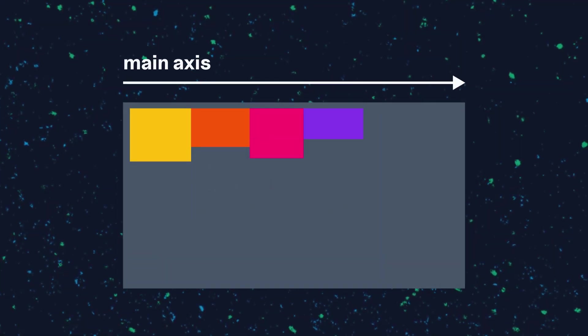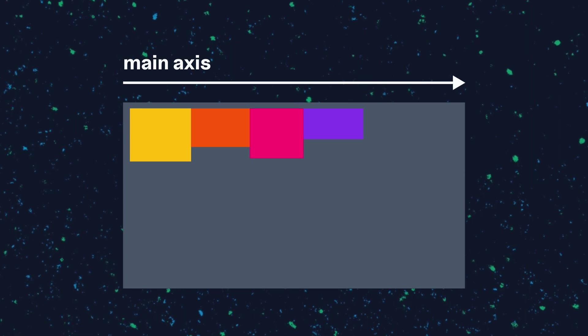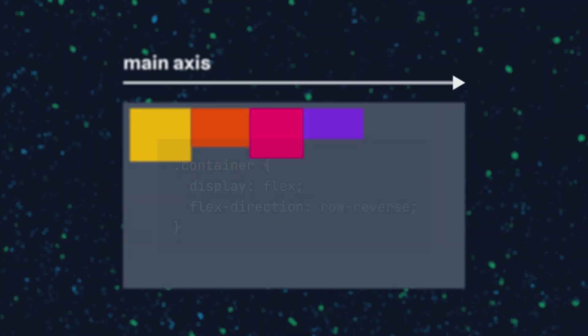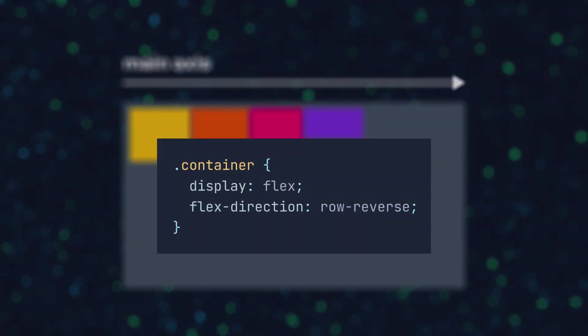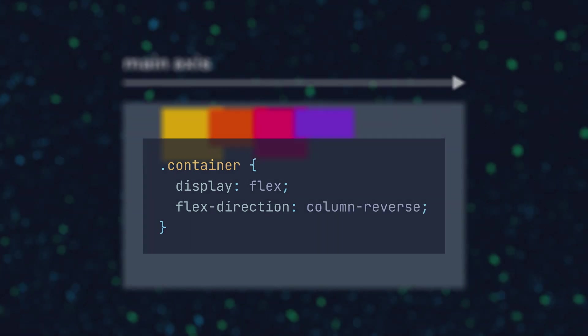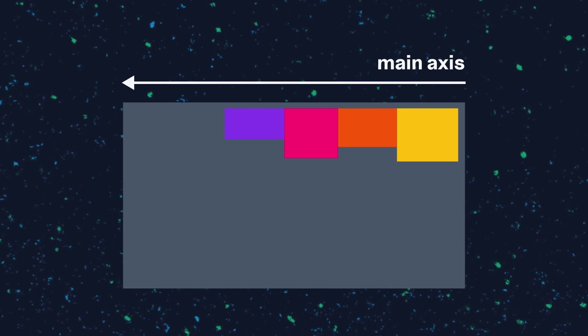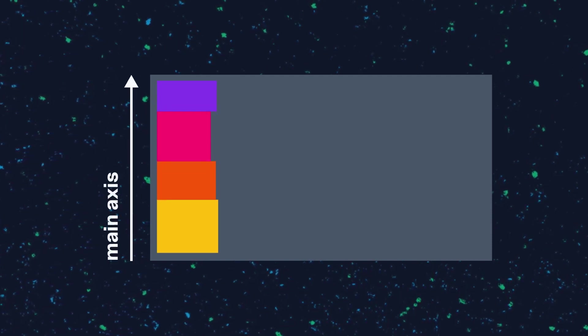This invisible line these items are on is called the main axis, which is important to remember for later in the video. Flex-direction has three more possible values: row-reverse, column, and column-reverse. Row-reverse is the same as row, but the flex items align right to left. Column shifts the main axis and aligns the flex items from top to bottom, and column-reverse aligns the items from bottom to top.